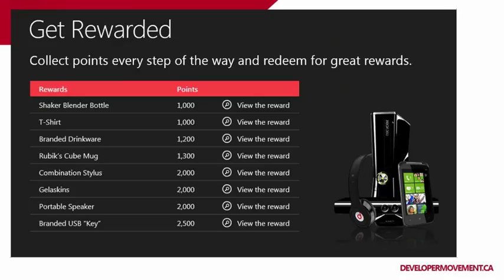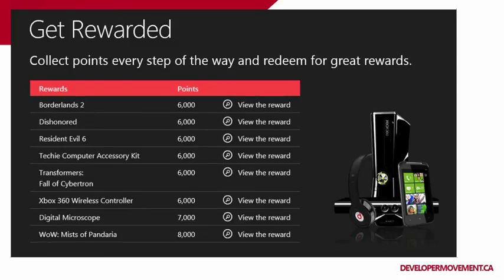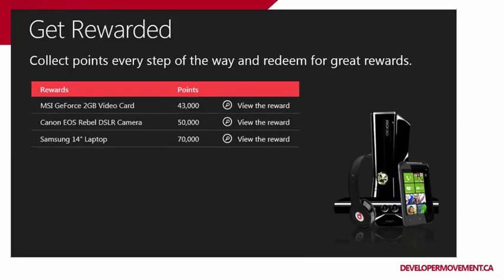What you see on the screen shows how the rewards break down. You register for the Developer Movement, you get a thousand points right there. You publish an app, you start getting more points. The more applications you build, the more points add up. You can get anything from a blender or shaker to business cases, Xbox stuff, home theaters, and screens. Just yesterday, someone tweeted they're getting their TV shipped. All for building an app. Even one app is a good start.